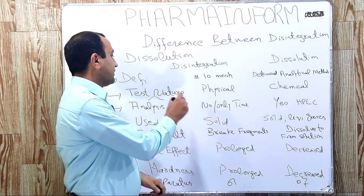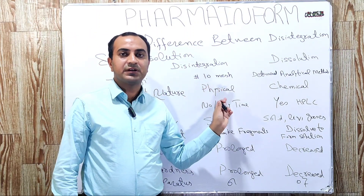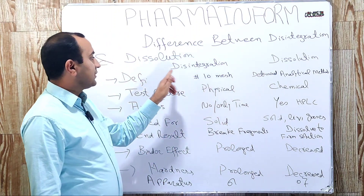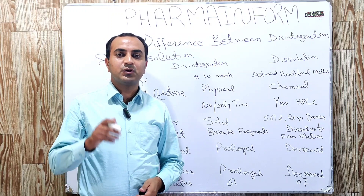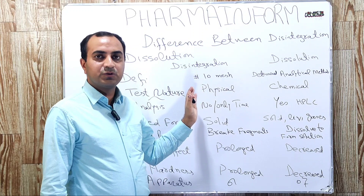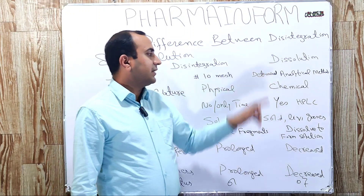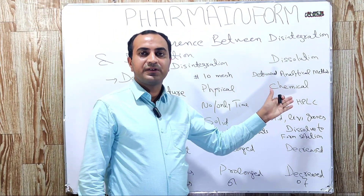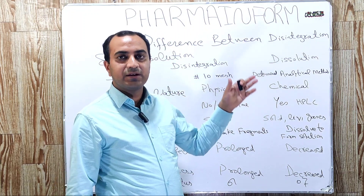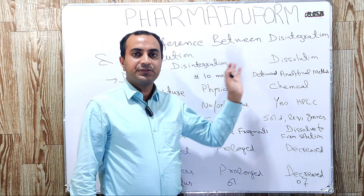The next difference is the nature of the test. Disintegration is basically a physical test, while dissolution is a chemical test. It is a physical test because in disintegration we only count the time required for breakdown of the dosage form — no chemical or analytical testing is required. In dissolution, it is a chemical test because we use an analytical method to determine the amount of drug dissolved.